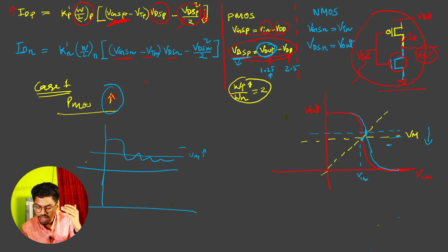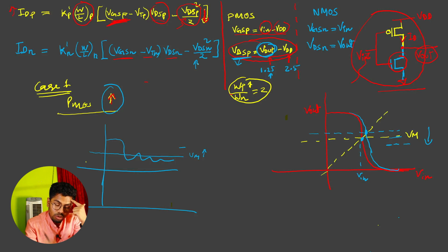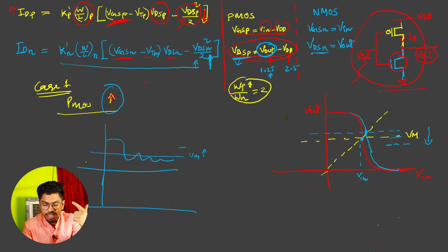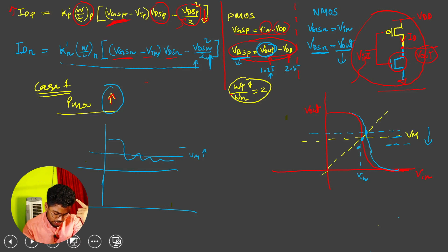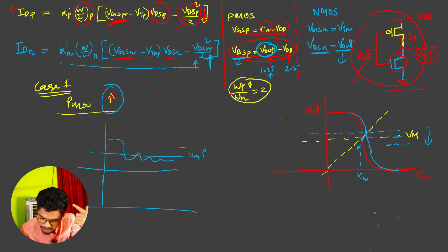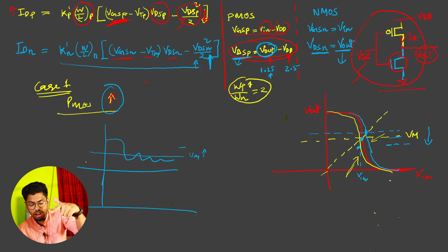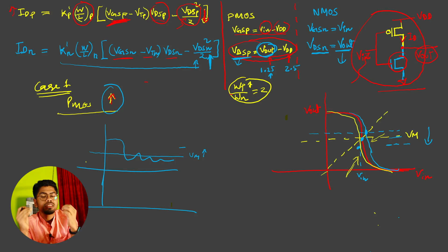The same analysis applies for getting Vm below the midrange. We can do that by increasing the size of NMOS. If I increase NMOS size without touching PMOS, NMOS can handle more current but PMOS is not supplying the same amount, so to satisfy the current equation, NMOS needs to reduce its Vdsn — and Vdsn implies Vout. So Vout decreases and we get a modified graph that shifts down. In bookish language: a good PMOS — meaning a bigger PMOS — gives the blue curve; a good NMOS with a relatively smaller PMOS gives the yellow curve; and the nominal Wp/Wn = 2 gives the red curve.